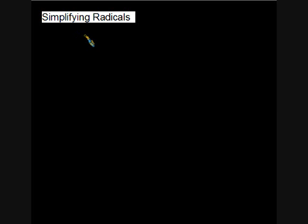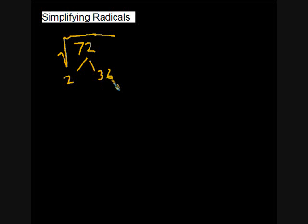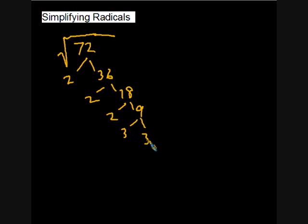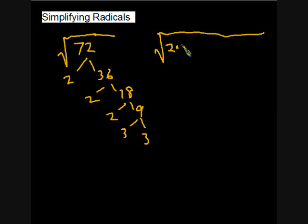Now what if we have two pairs? Let's look at the square root of seventy-two. Divide by two to get thirty-six, divide by two to get eighteen, divide by two to get nine, divide by three to get three. Those are all the prime factors of seventy-two. You'll notice we have two times two times two times three times three — that's a pair of twos, a pair of threes, and a single two remaining.